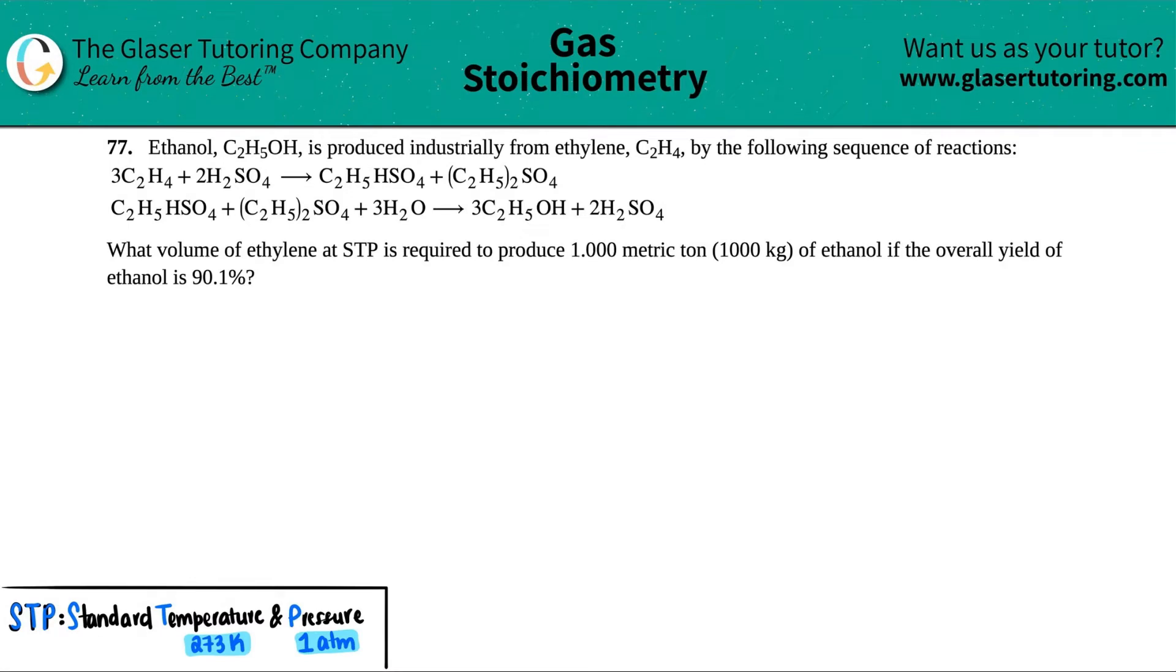Number 77. Ethanol, which is C2H5OH, is produced industrially from ethylene, which is C2H4, by the following sequence of reactions. They give us two reactions that follow with each other. The question is asking, what volume of ethylene at STP is required to produce 1.000 metric ton, which is 1,000 kilograms of ethanol, if the overall yield of ethanol is 90.1%?